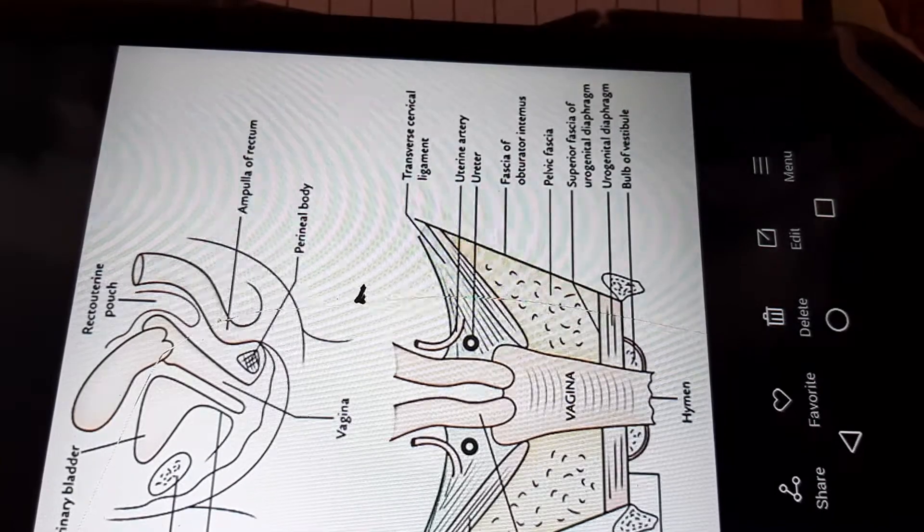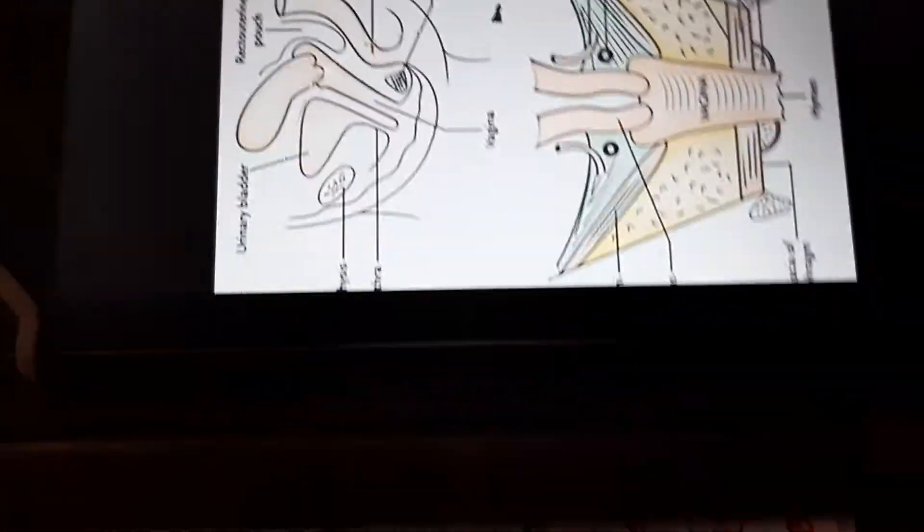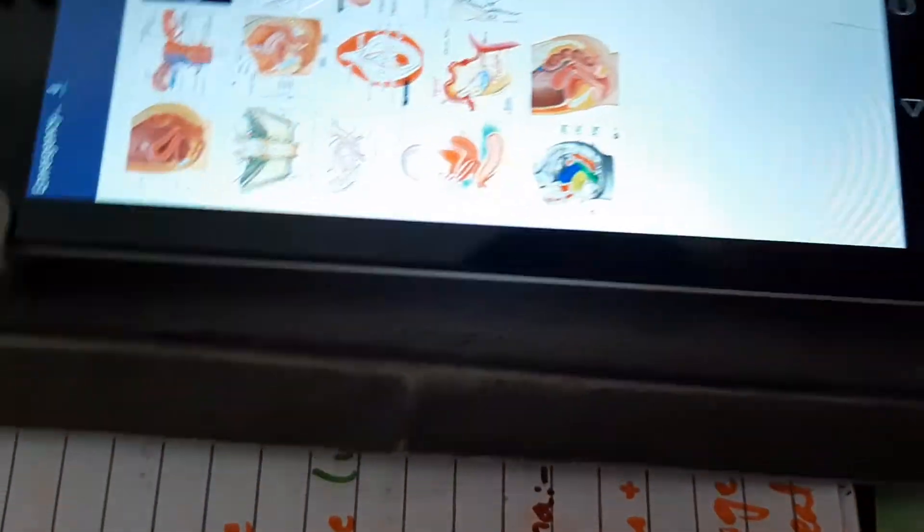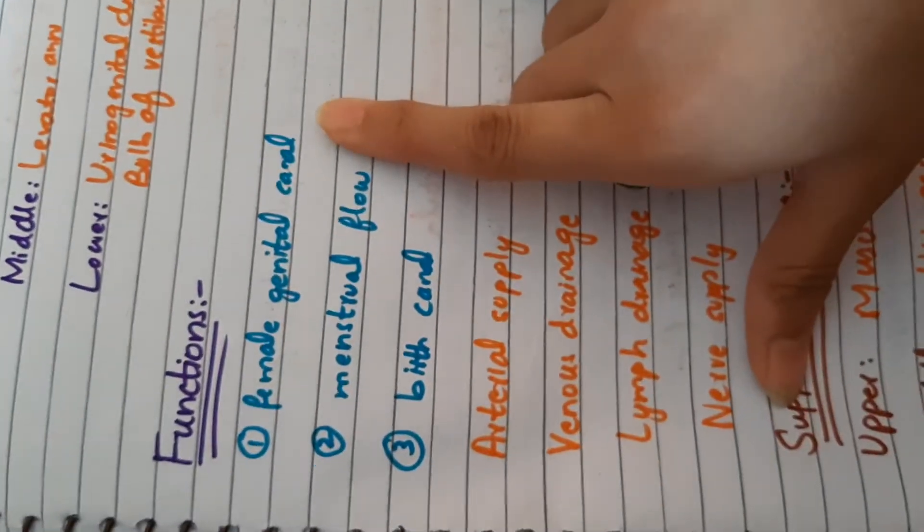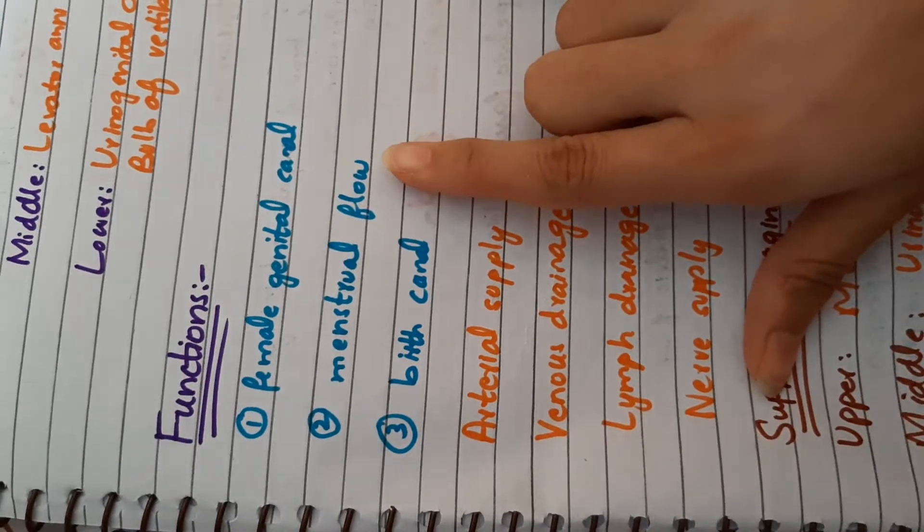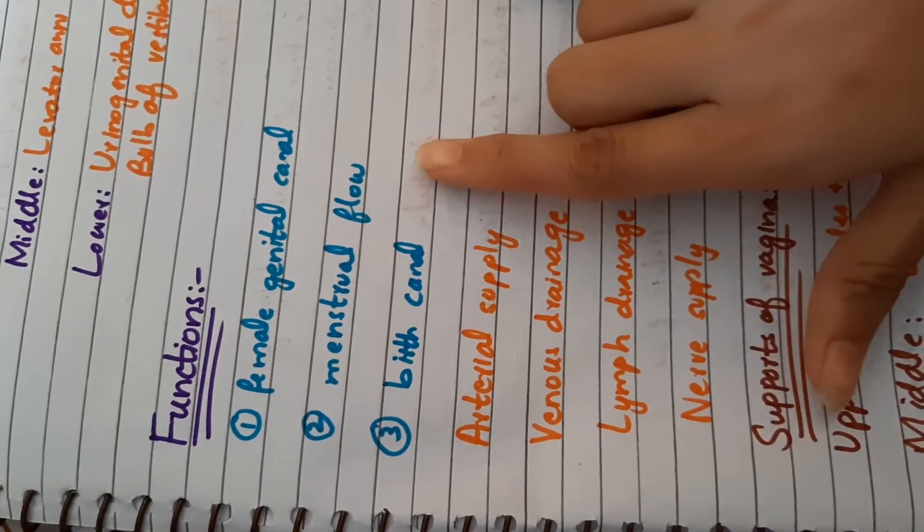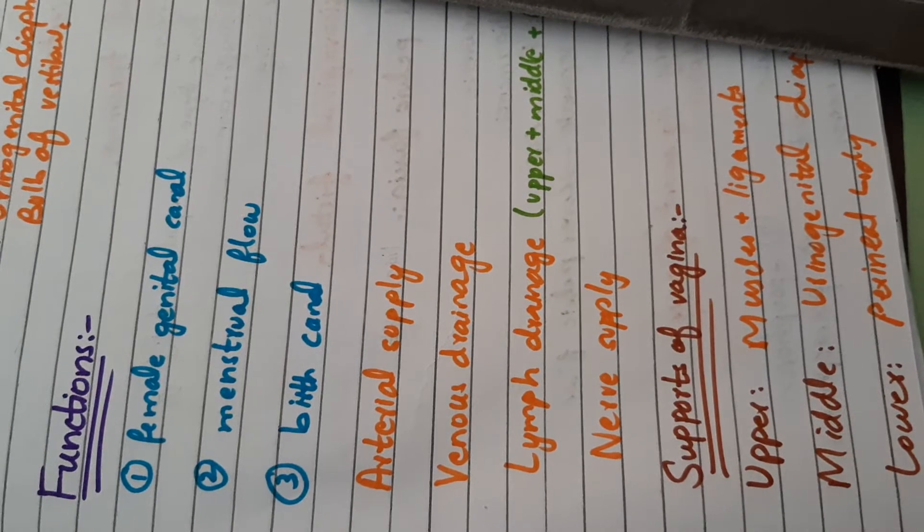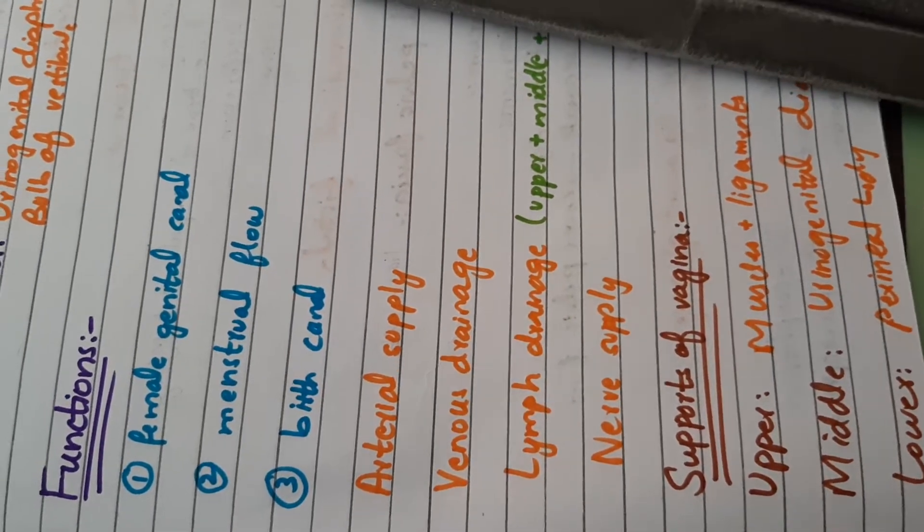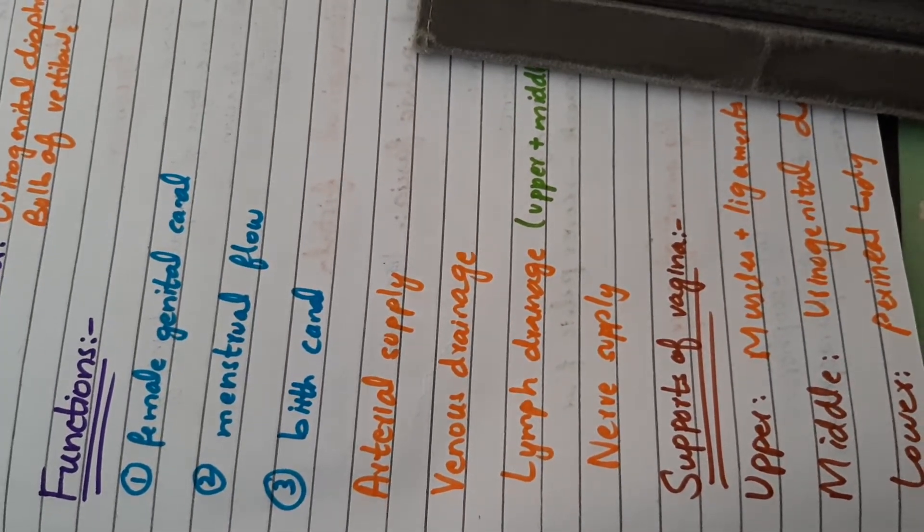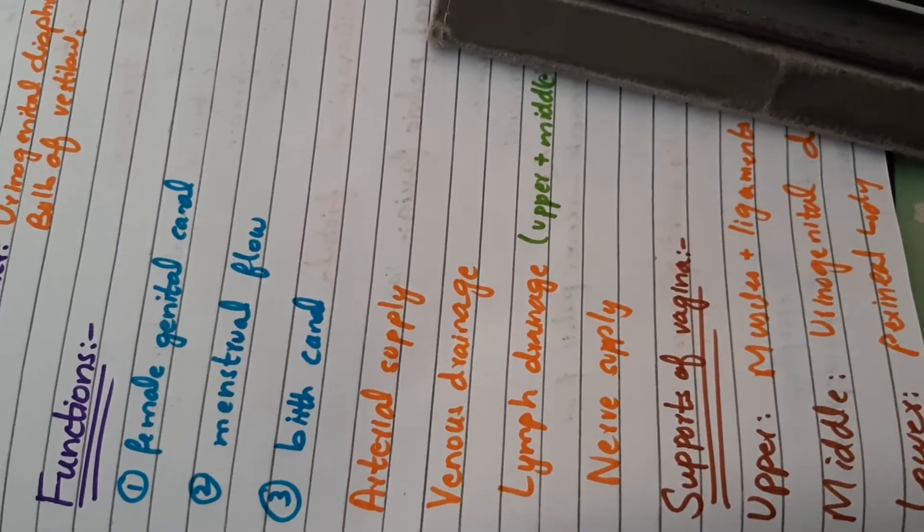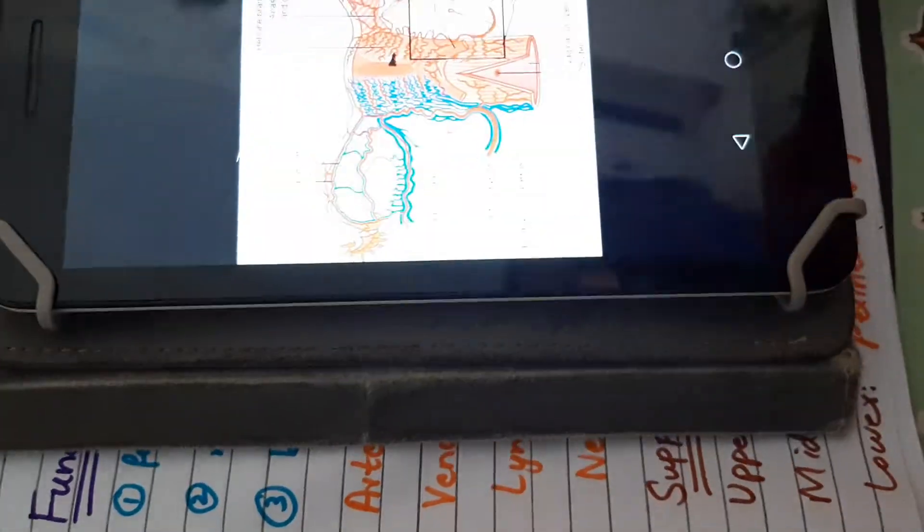Next we come to functions of vagina. What are the functions? It acts as genital canal, then menstrual flow, and then birth canal. Arterial supply: vaginal artery and uterine artery. Vaginal artery is a branch of internal iliac artery.